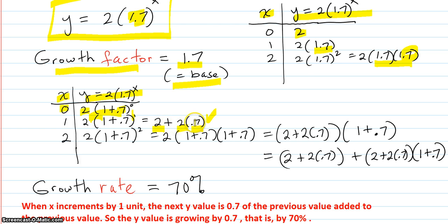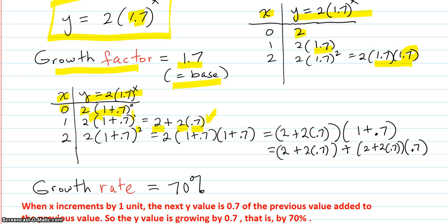That sounds like 70% growth. .7 times the previous added to the previous means you're growing at a rate of .7, which is 70%. Now let's see the next step, which is slightly more complicated.